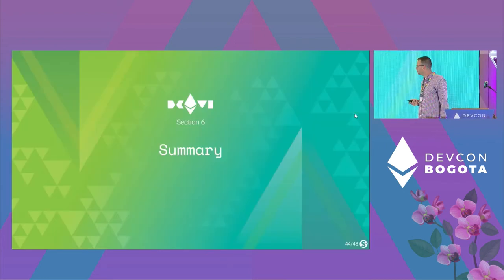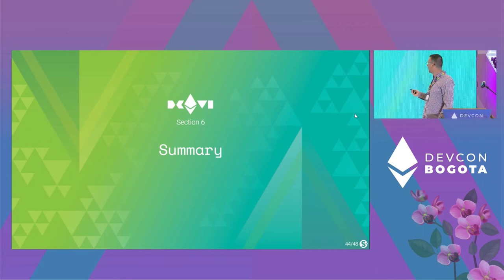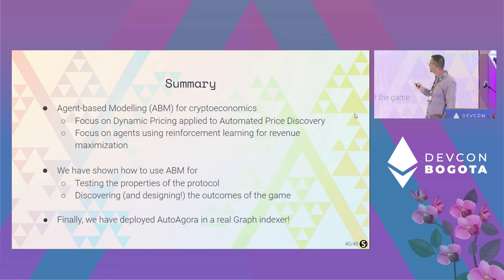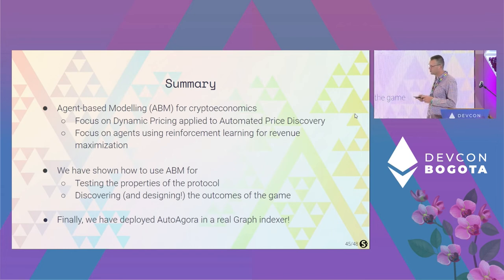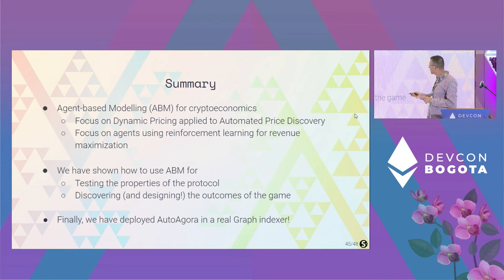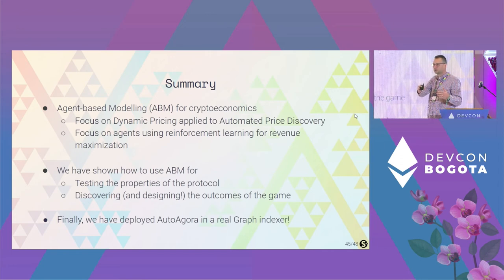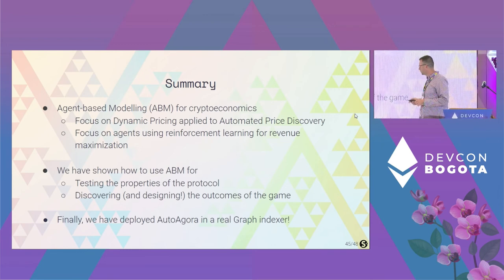To summarize: agent-based modeling for crypto economics was the core of the talk. We focused on dynamic pricing applied to The Graph protocol for automated price discovery, using reinforcement learning and multi-agent simulation for revenue maximization. We showed how to test protocol properties systematically — defining market conditions, properties, and testing agents against them. Finally, we deployed Auto Agora in production and demonstrated it works.